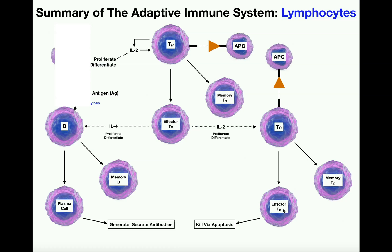The effector cytotoxic T cells are going to be the infantry of your army. While the effector helper T cells are the generals calling the shots by releasing interleukins, the effector cytotoxic T cells are the foot soldiers — the infantrymen. They actually migrate to the site of infection and kill the bacterium directly by inducing apoptosis.